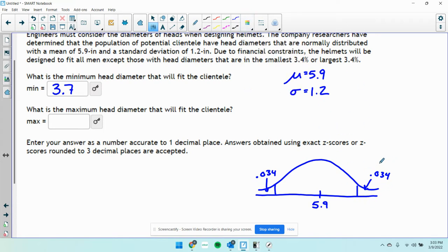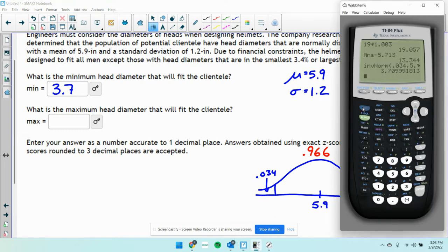Well, if there's 3.4% above it, that means there's got to be 96.6% below it or 0.966 below it.